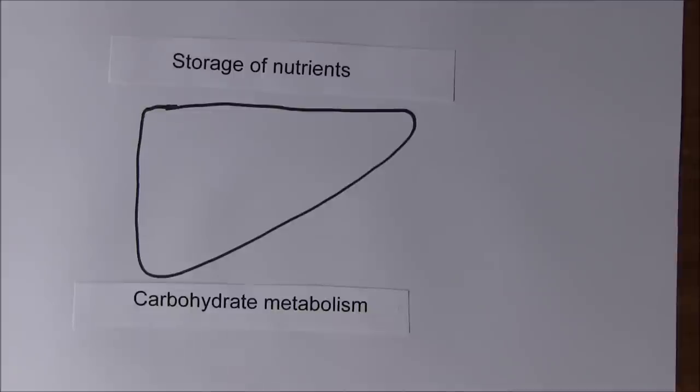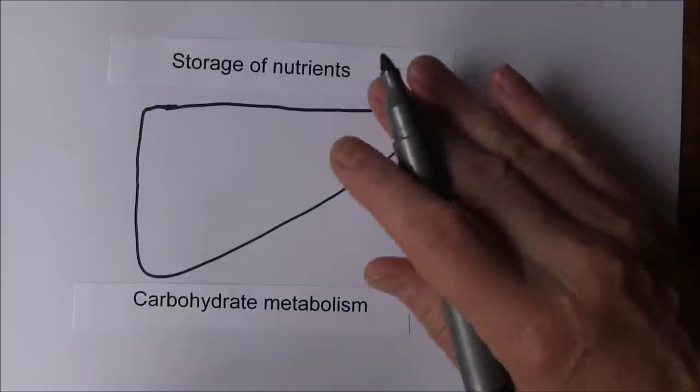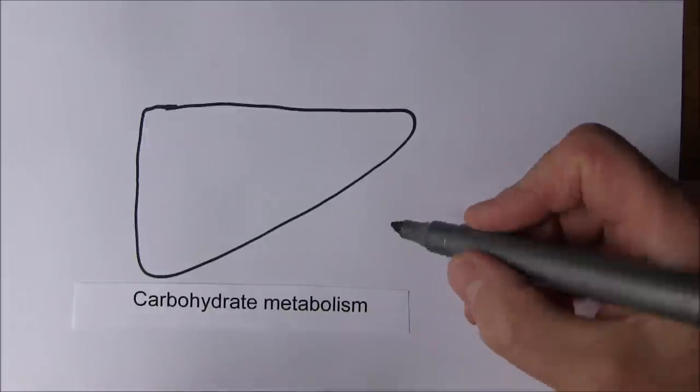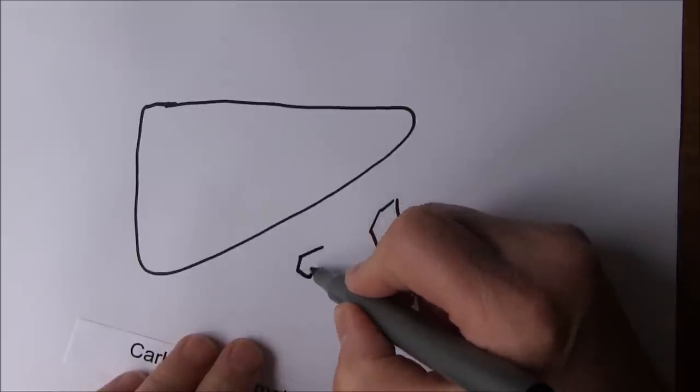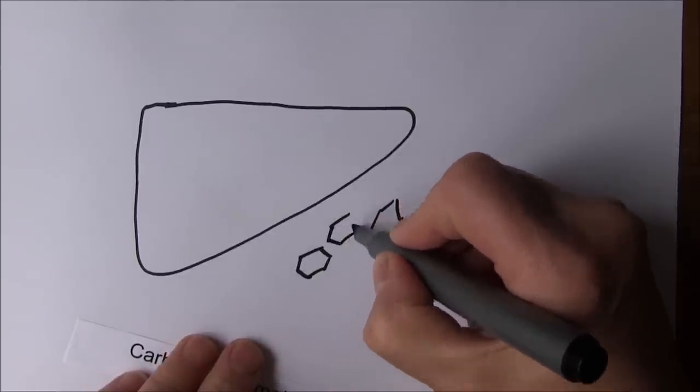Going back to the liver itself, it's going to help regulate the amount of glucose in the blood. If there's too much glucose in the blood, that's hyperglycemia. If there's not enough, that's hypoglycemia. We don't want either. We want euglycemia, normal levels of glucose. Sometimes we're eating and lots of glucose is going to come into the blood. We're going to get lots of these individual monosaccharide glucose units.